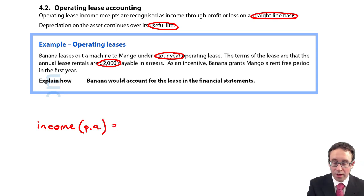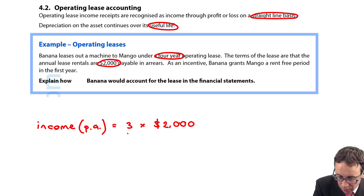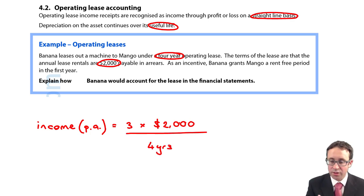Okay so what you've got there is you need to go through and look at the rental income per annum. So just be careful there are three payments of $2,000 because in the first year there is a rent-free period and then we spread that over the four years.